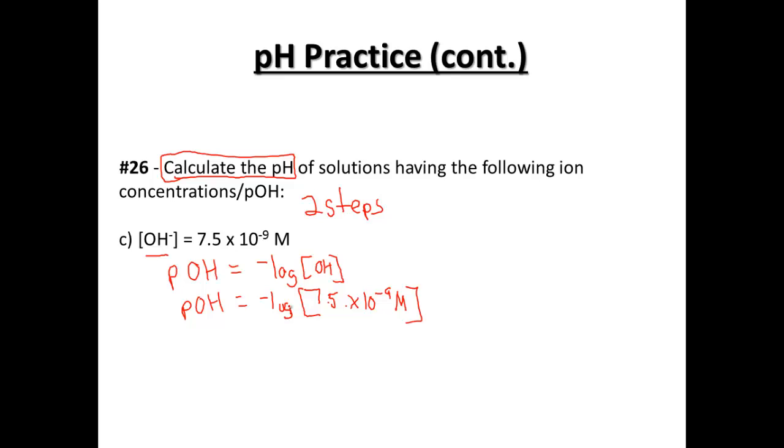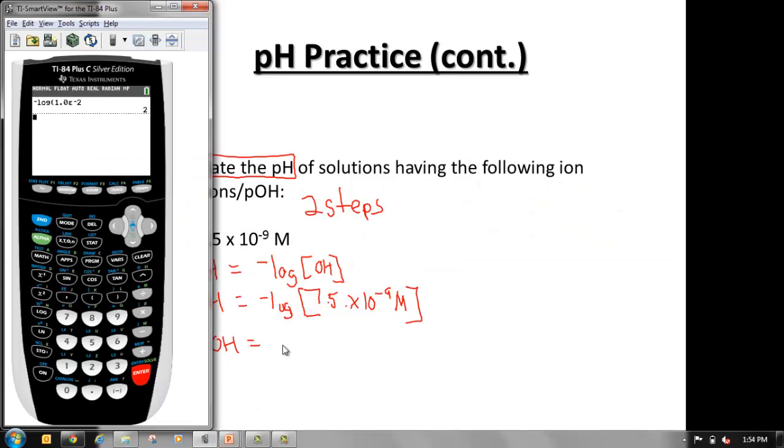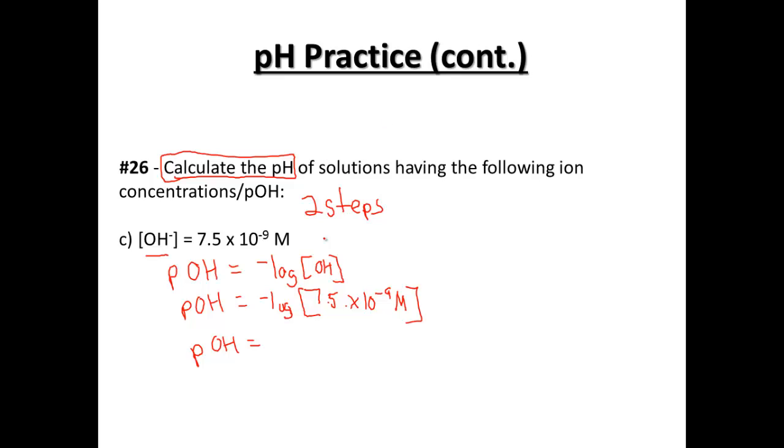And so when we do that, we're going to go negative log of 7.5 times 10 to the negative ninth. And when we get that answer, about 8 point, and we're going to go two decimals, one three. 8.13 is going to be the pOH.